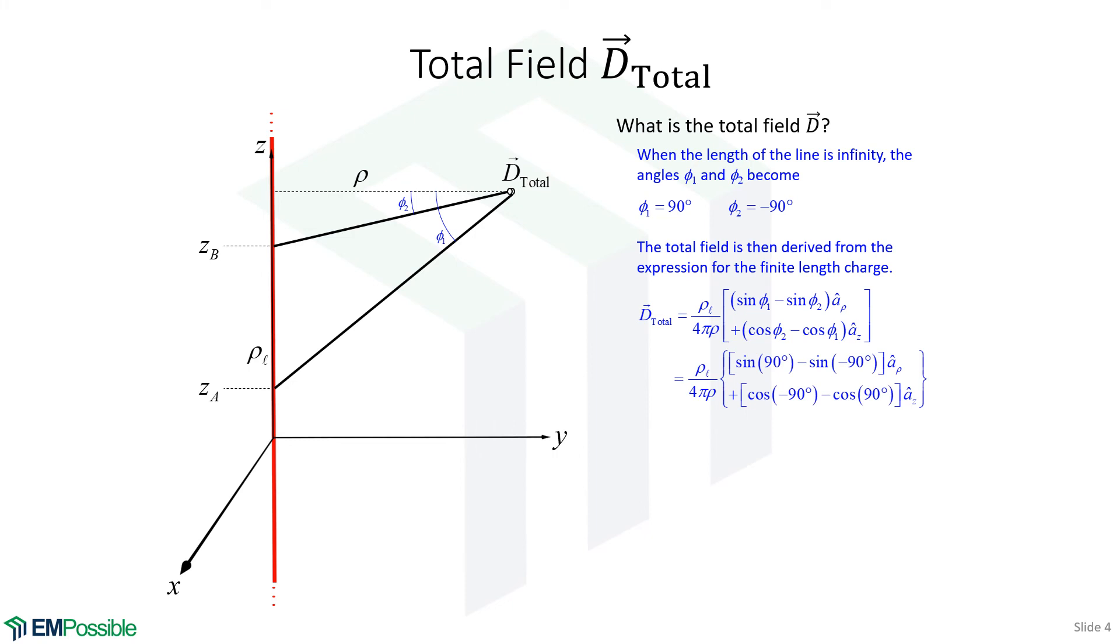We'll simply put in our angles. We'll recognize that sine of 90 degrees, that's 1. Sine of negative 90 degrees, that's negative 1. So we'll have a minus negative 1 or a positive 1.